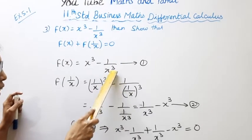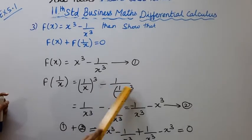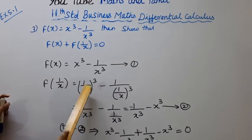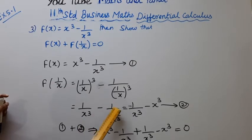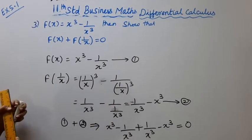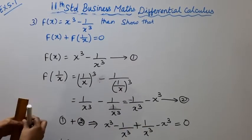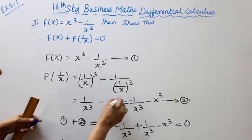1 by x cubed. So 1 cubed equals 1 by x cubed, minus 1 by 1 by x cubed. This simplifies to 1 by x cubed and then x cubed.